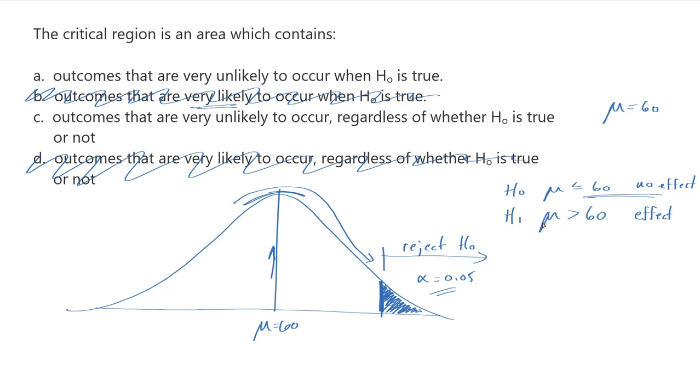If on the other hand the null was false, let's say that the treatment does increase scores, so that would mean that the true mean is not 60, it's going to be somewhere higher. Perhaps there's going to be a peak here, in which case these would not be unlikely to occur.